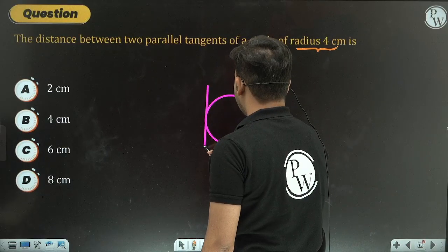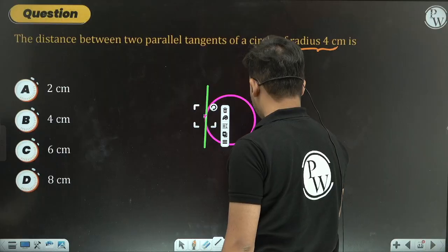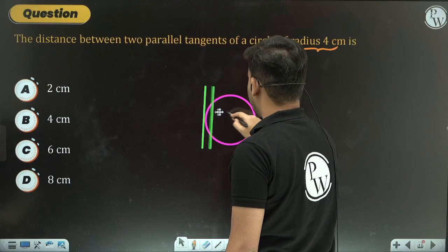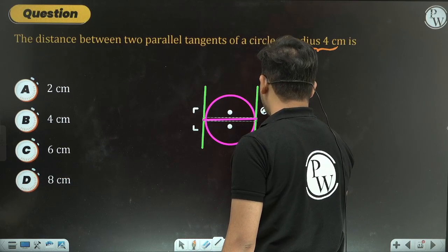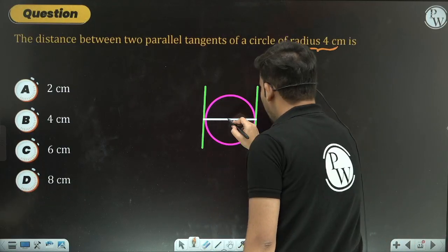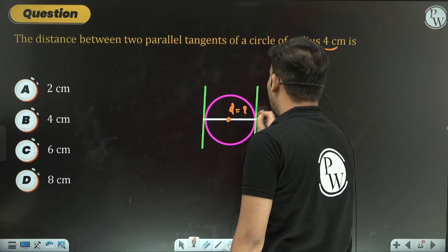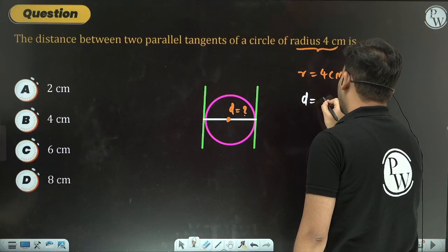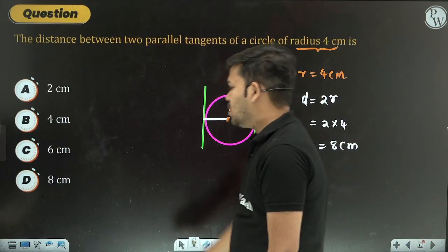Question 2: The maximum number of parallel tangents to a circle is two. Related question: if the radius R is 4 cm, what is the diameter? Diameter D equals 2 times R, so D equals 2 times 4, which is 8 cm.